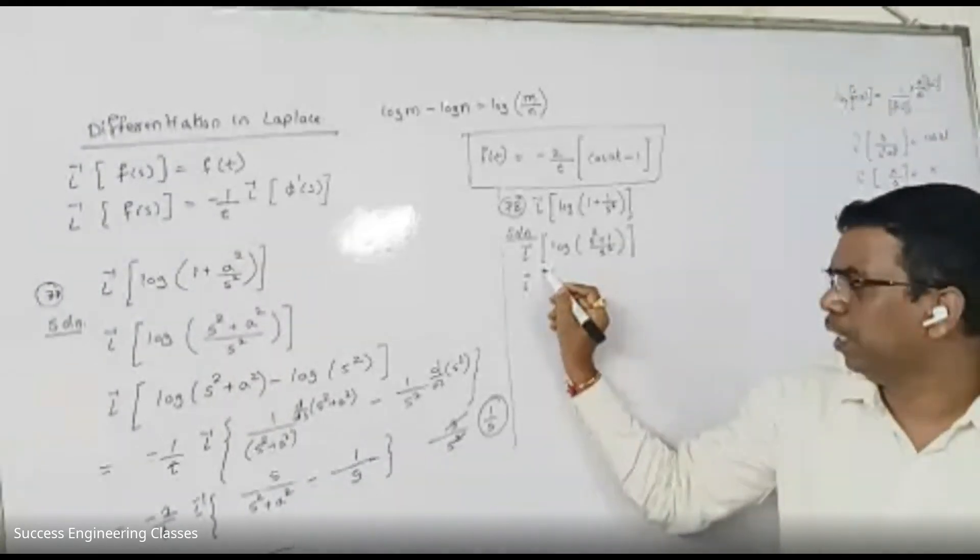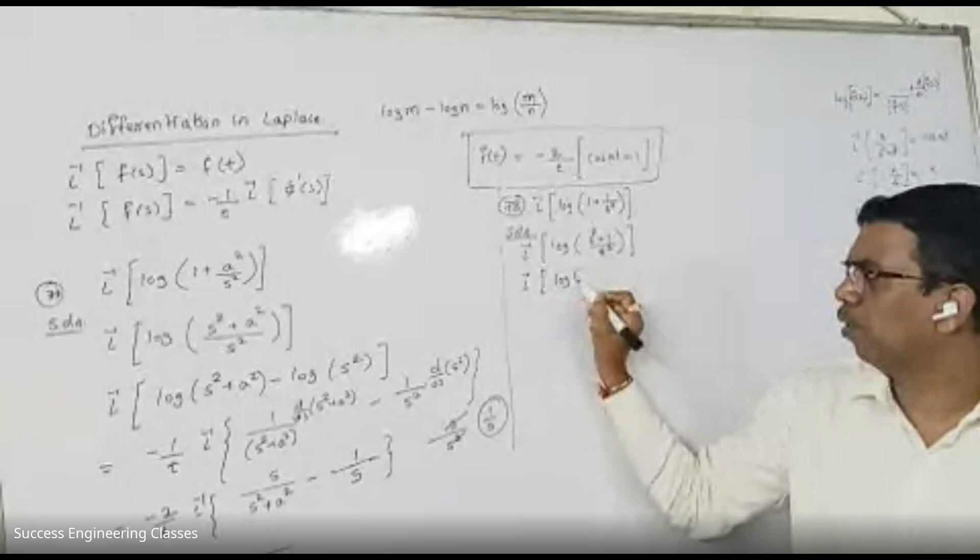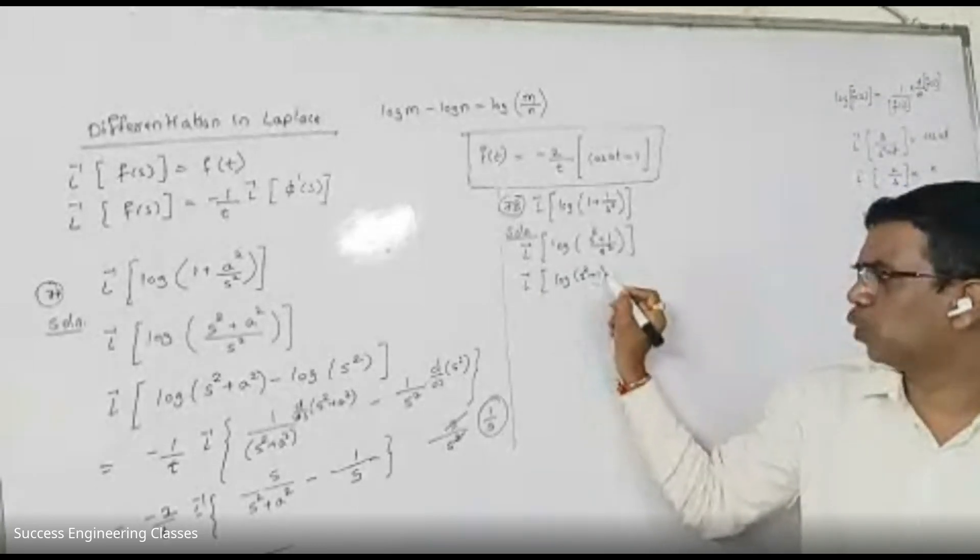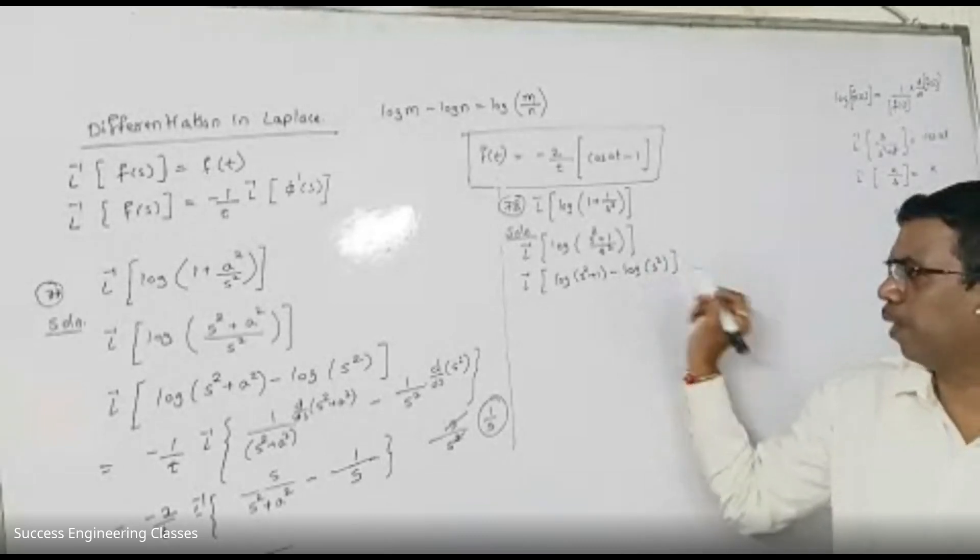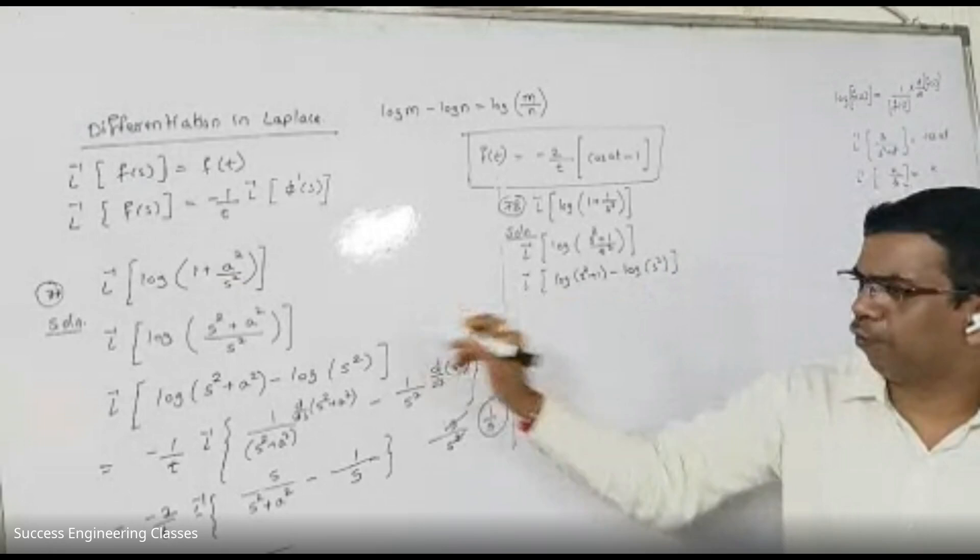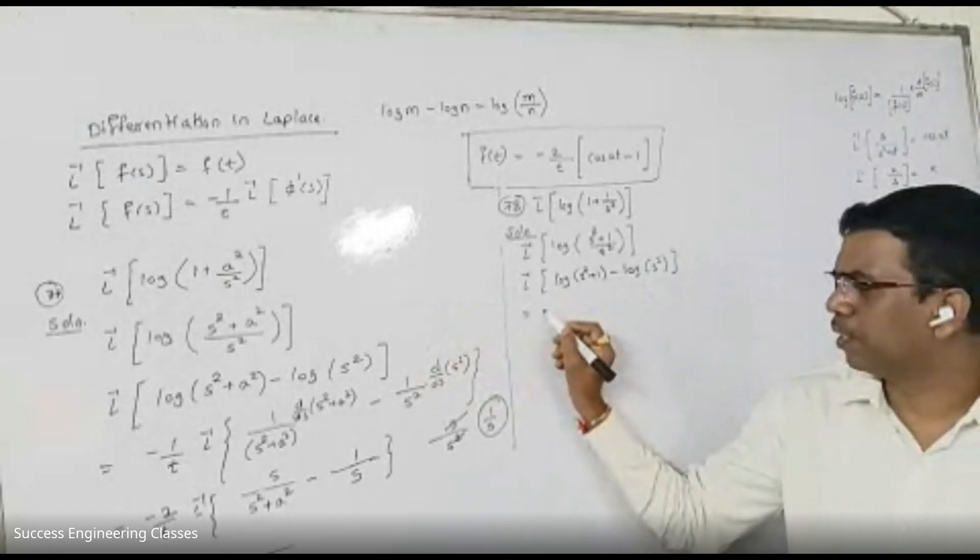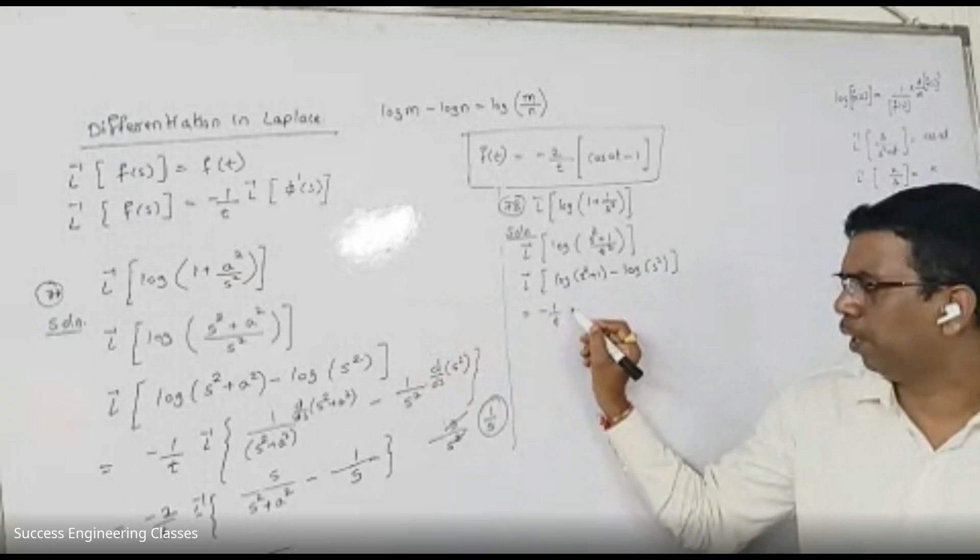How do we write? We write log of A square plus 1 minus log of A square. So, directly formula apply. And answer will get minus 1 upon T.